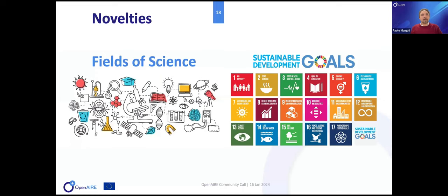In the last year we introduced fields of science and sustainable development goals — tagging all records with these important topics. We have a coverage of 245 million sustainable development goal links to our products, which is a very relevant and important result. We did that thanks to interaction with a couple of research data centers that contributed a lot in this activity. As OpenAIRe, we don't have the whole knowledge of the world, so we definitely need others to contribute to improve the quality of the graph.